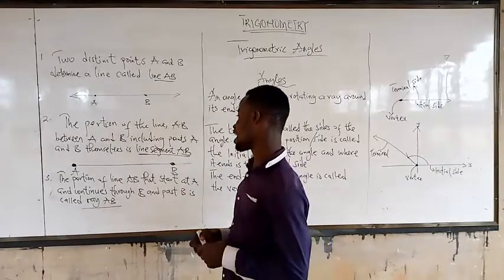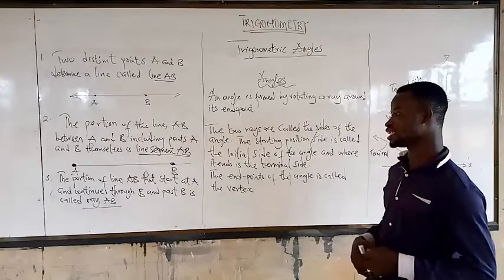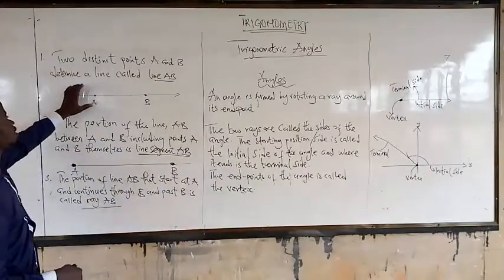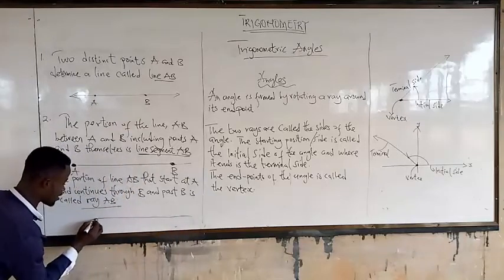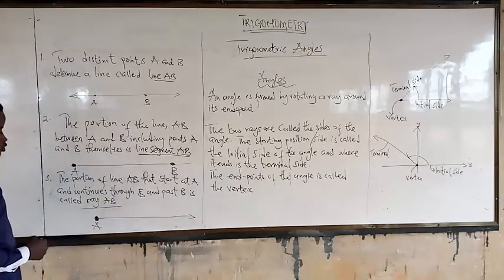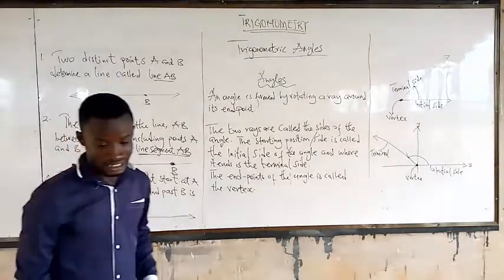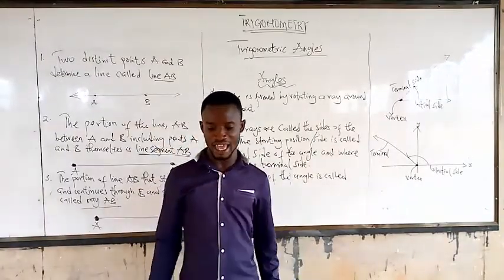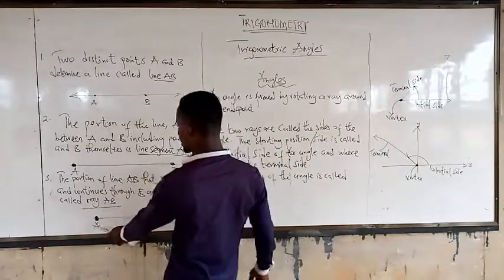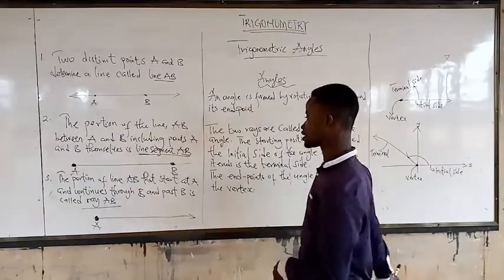The third concept is: the portion of line AB that starts at A and continues through B and beyond is called Ray AB. A ray is different from a line. A ray has a starting point — let's call that A — and then it goes to infinity in one direction. The point A is known as the endpoint of the ray.